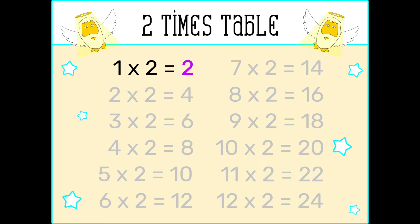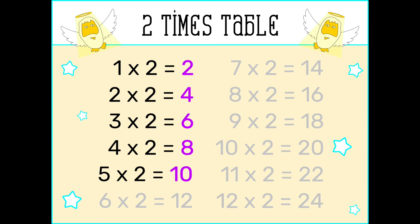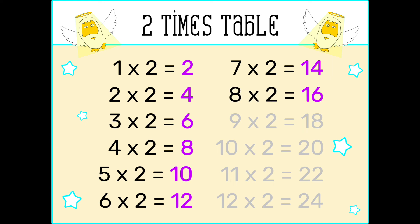One times two is two. Four times two is eight. Five times two is ten. Six times two is twelve. Seven times two is fourteen. Eight times two is sixteen. Nine times two is eighteen.